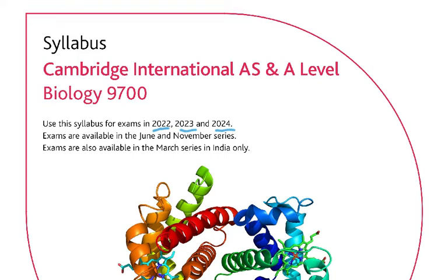Now if you are starting your A-level classes in August 2022, you're going to take the exam in 2024. This syllabus has been written for the class of 2024. Even if you're taking the AS level in 2023, this syllabus is valid for you all. This is the syllabus you need to print out and keep a copy of at all times.